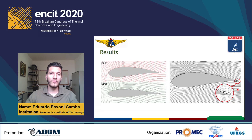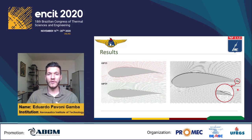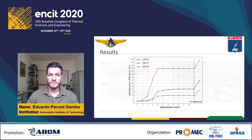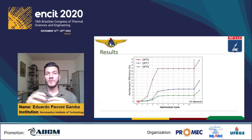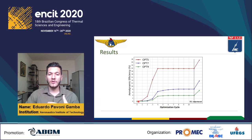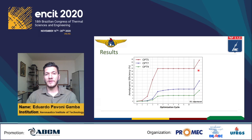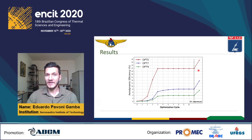To confirm this idea, we performed a simulation of the Opti-5 geometry under Opti-9 conditions. As you can see in the right picture, there is indeed a stall at the trailing edge. Once we understood why this difference happens, let's investigate how it affects our cost function or aerodynamic efficiency.